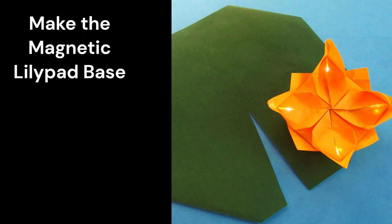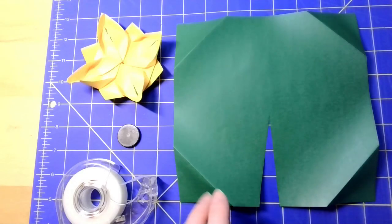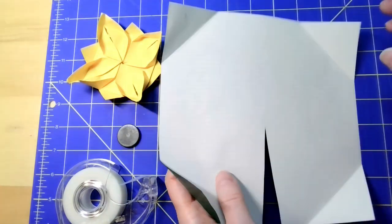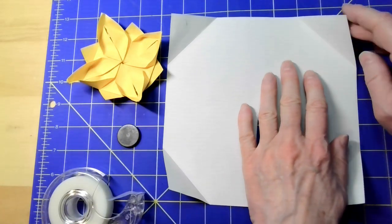The final step is to make the magnetic lily pad base. Take a green square paper and cut a narrow wedge out of one side. Flip it over and fold each corner down.